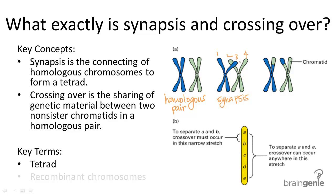In crossing over, crossing over is the actual exchange of genetic information, where pieces of both chromosomes break off and then reattach to the opposing homologous chromosomes. The completed exchange creates recombinant chromosomes with four different sister chromatids, as opposed to only two different types before the exchange. These four sister chromatids are then separated into four different gametes through meiosis 1 and meiosis 2.